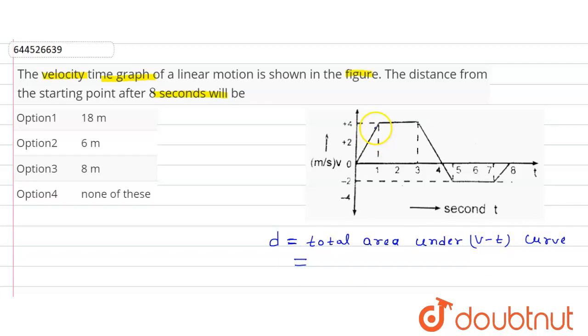So, distance d is equal to area for this region, for this triangle: one by two, base is how much? One into height is four. Plus this rectangle area will be how much? Three minus one, two, into four. Plus for this triangle here, area will be one by two, base is one, and height is four.